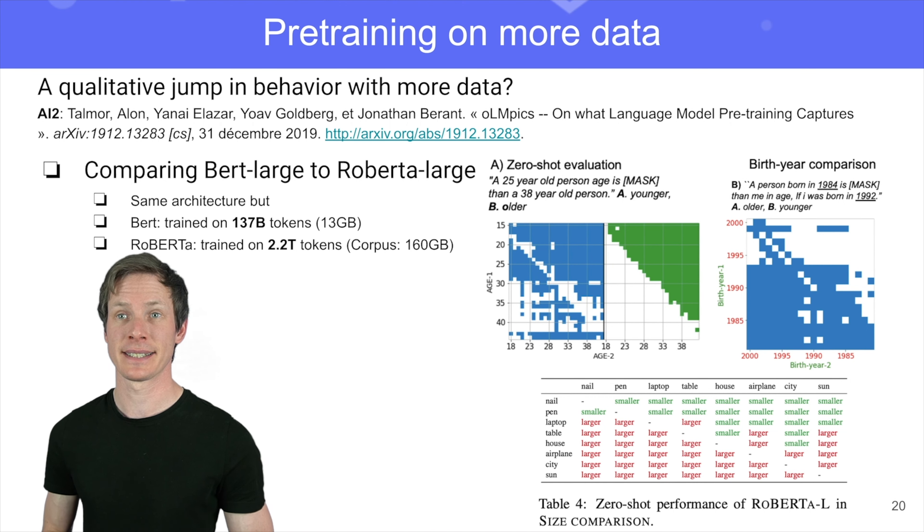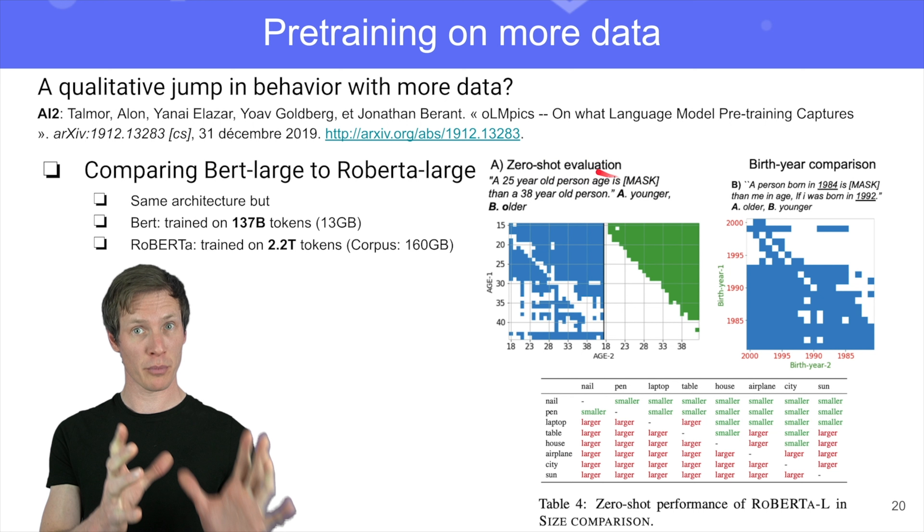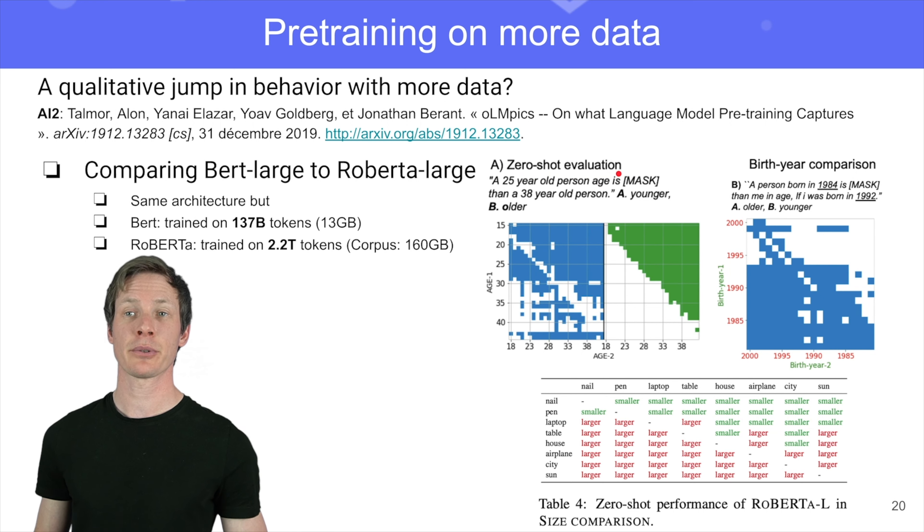And here you can see this very interesting zero-shot evaluation. So you just take the pre-trained model, you don't fine-tune it, and you ask it questions that are kind of like the Winograd schema challenge questions. Here you ask it, a 25-year-old person's age is blank than a 30-year-old person. And the model has to predict if the blank was younger or older. So it has to actually compare numbers together and use some common sense if you want. And you can see that BERT is pretty bad. BERT is the blue curve. And RoBERTa, which is the green curve, is actually super good at comparing this number in the range of ages for people.